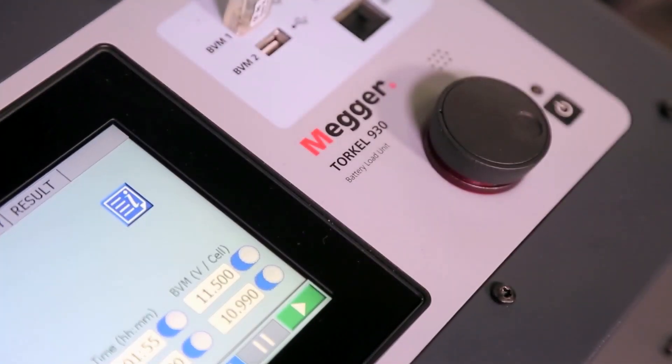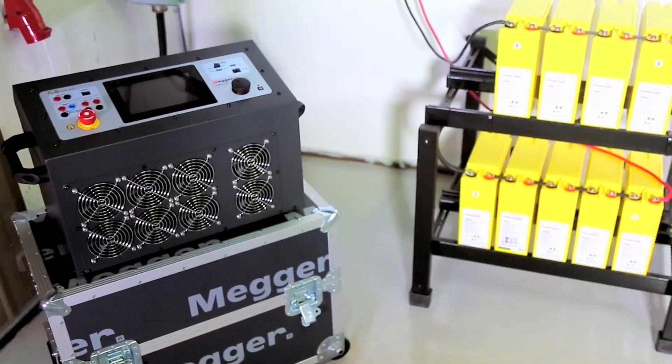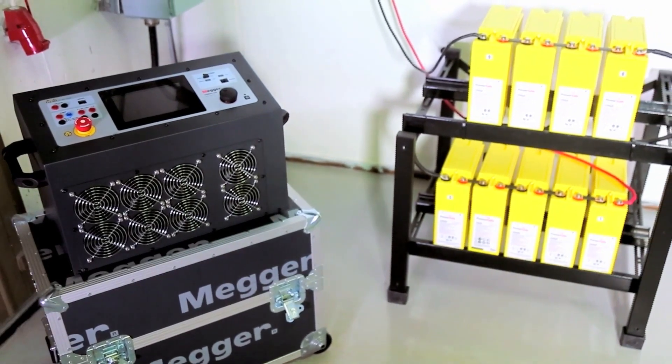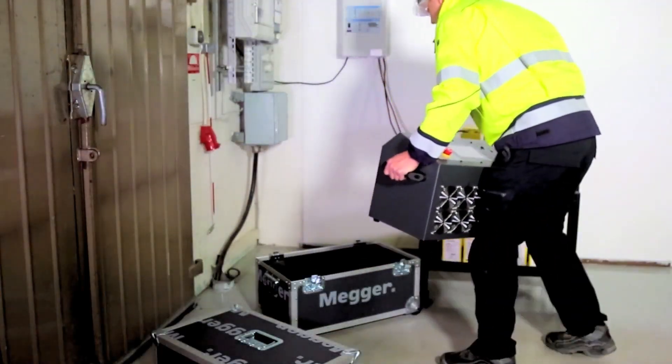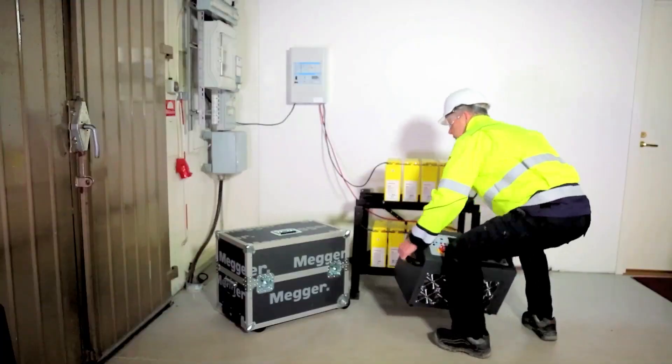Torkel 900 performs load tests or discharge tests to determine battery systems actual capacity. The instrument is lightweight enough to be carried by one person as well as be checked in as luggage on flights.